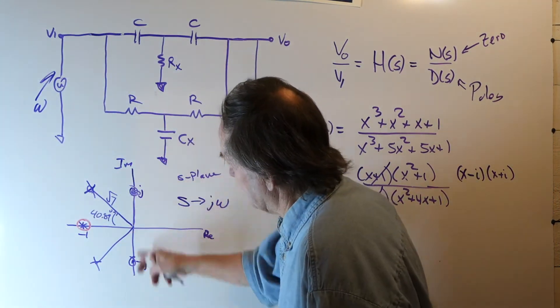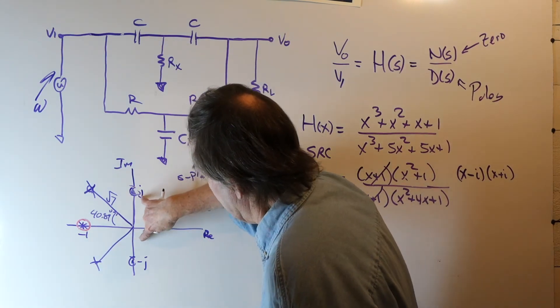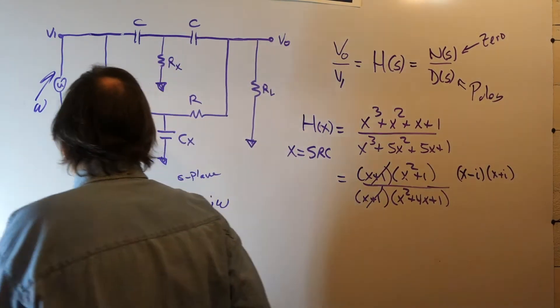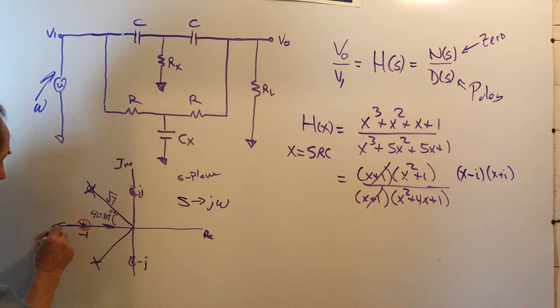But it doesn't affect the null, because the null is determined by two zeros sitting here on the J omega axis. So, it doesn't matter where this pole moves.